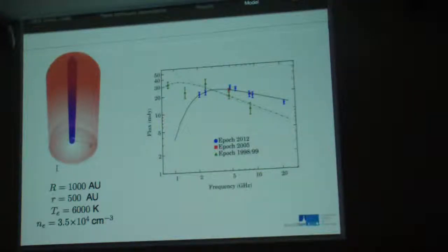This is the spectral energy distribution that we found. The blue points represent our observations. This emission is characterized by a turnover around 3 gigahertz. That could be because the emission that we detect has two components: one thermal and one non-thermal.